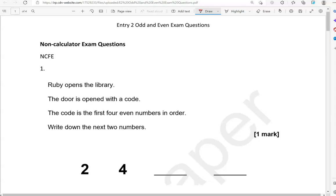Ruby opens the library. The door is opened with a code. The code is the first four even numbers in order. Write down the next two numbers. So we've got 2, 4, what's the next number and the number after. So you've got to imagine there being 3 here. So 2, 3, 4, 5, 6, 7, 8.